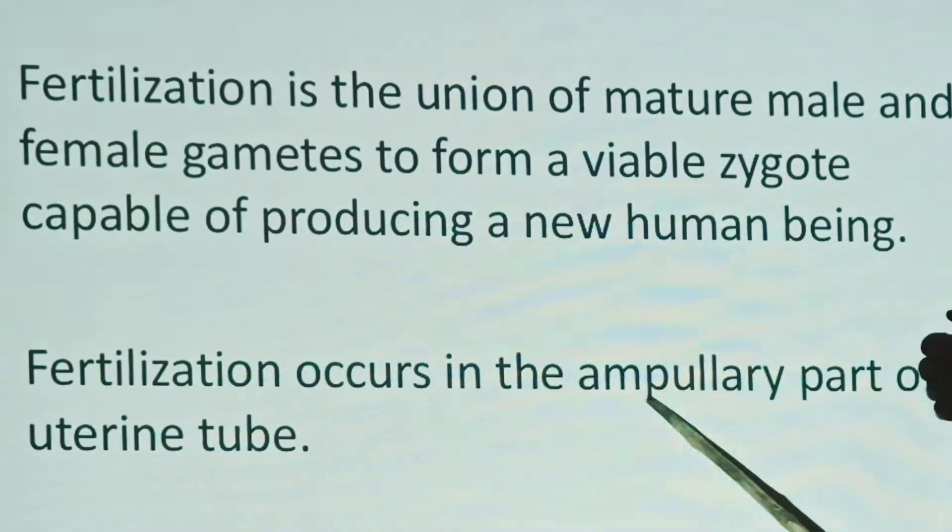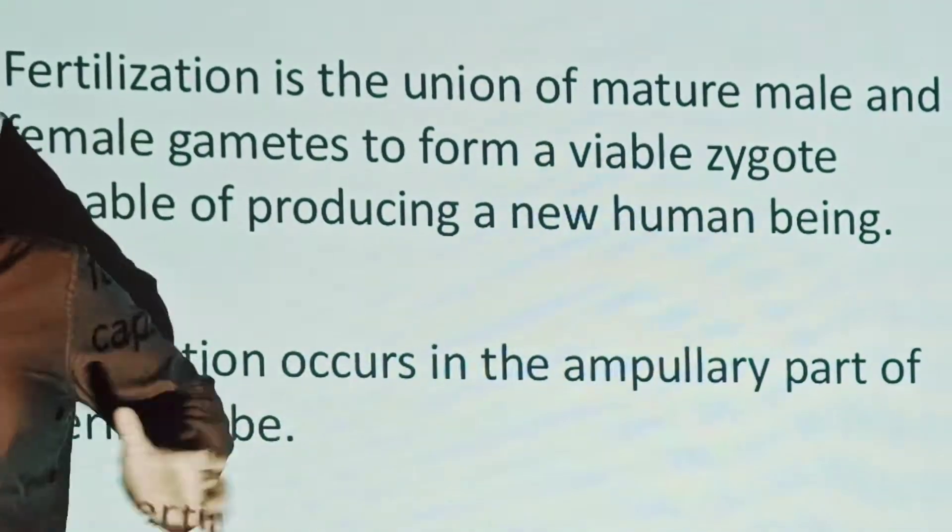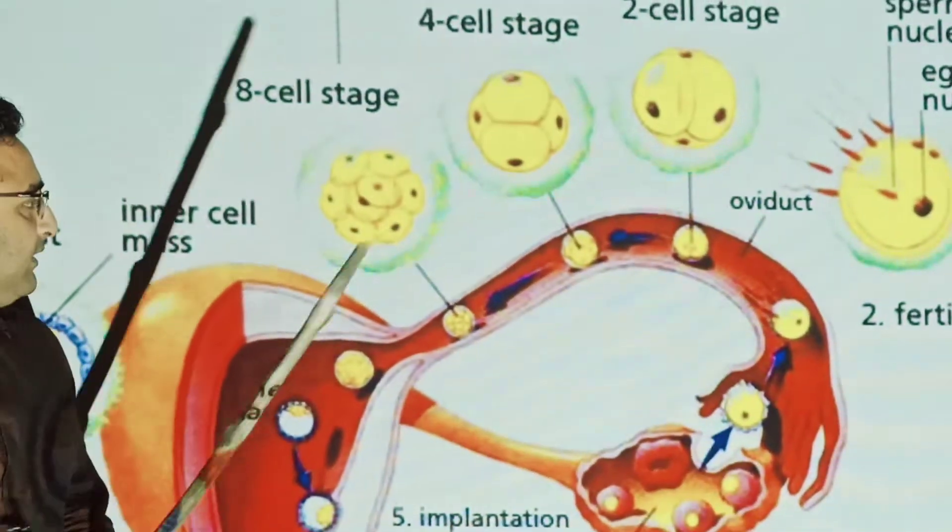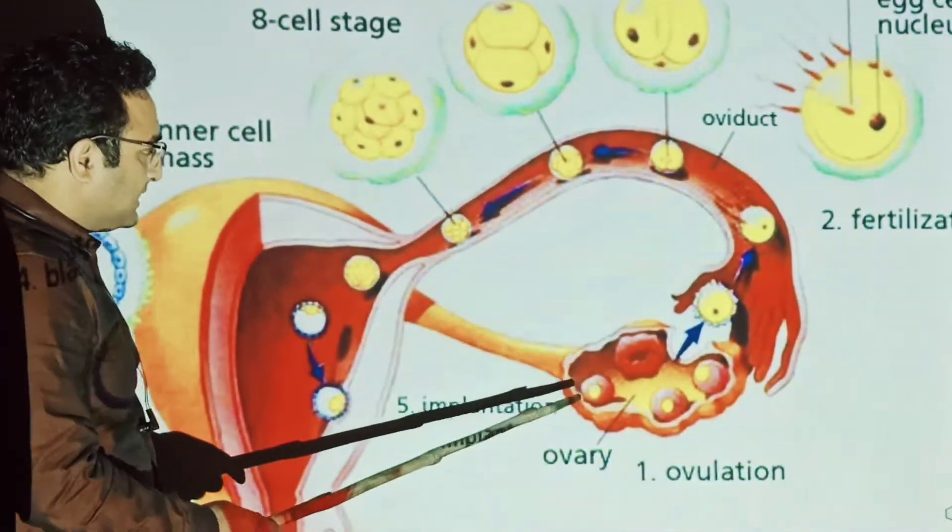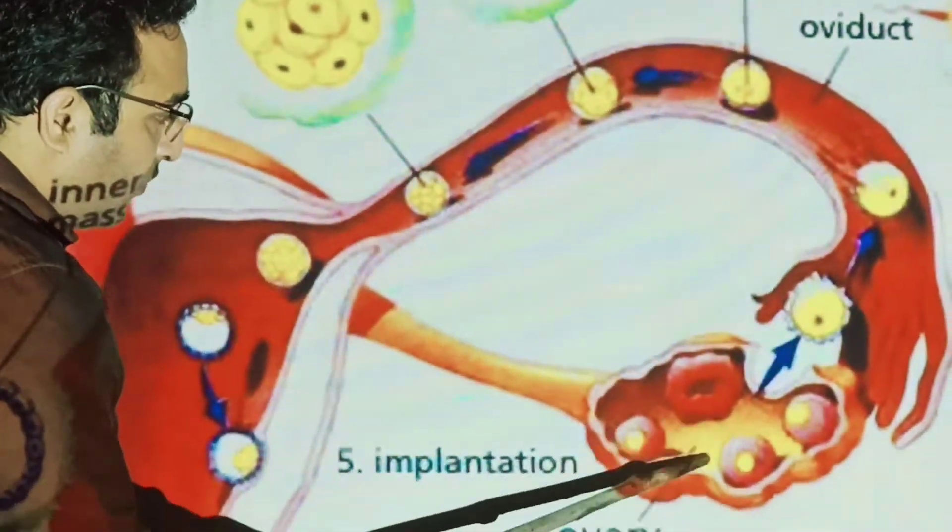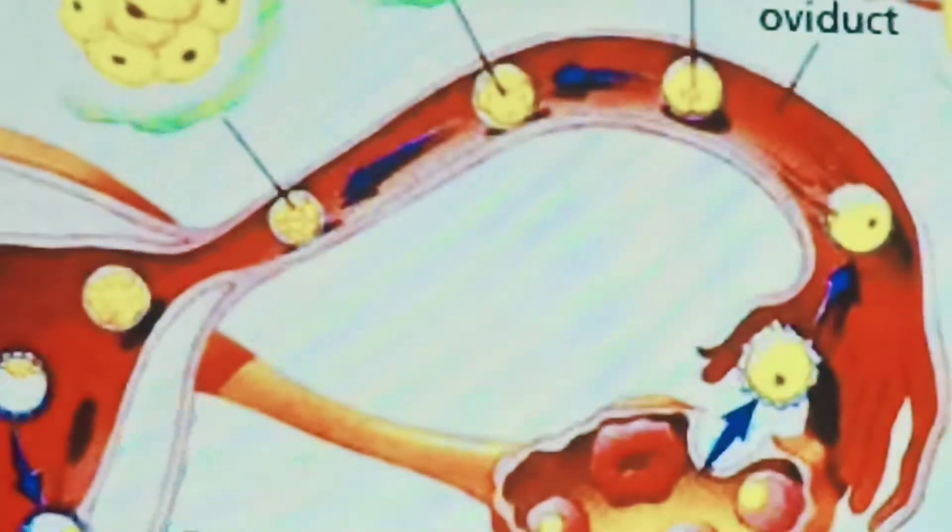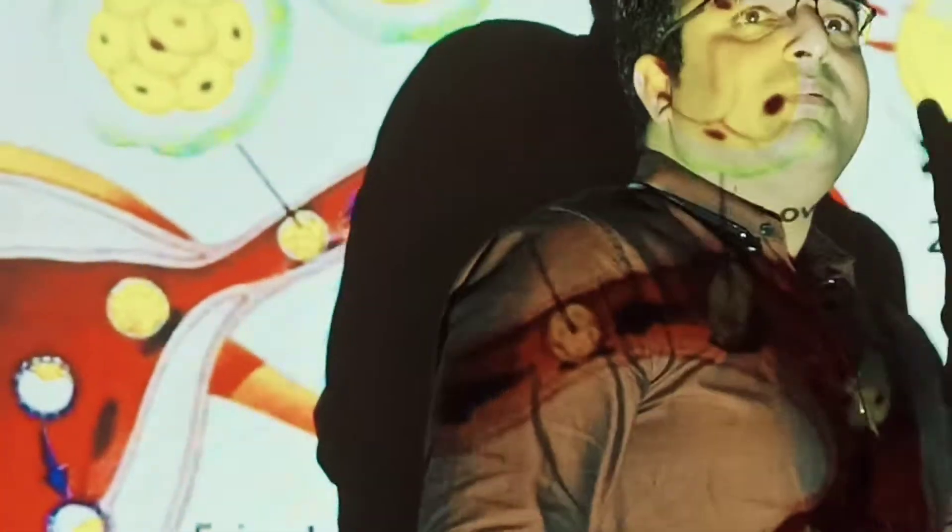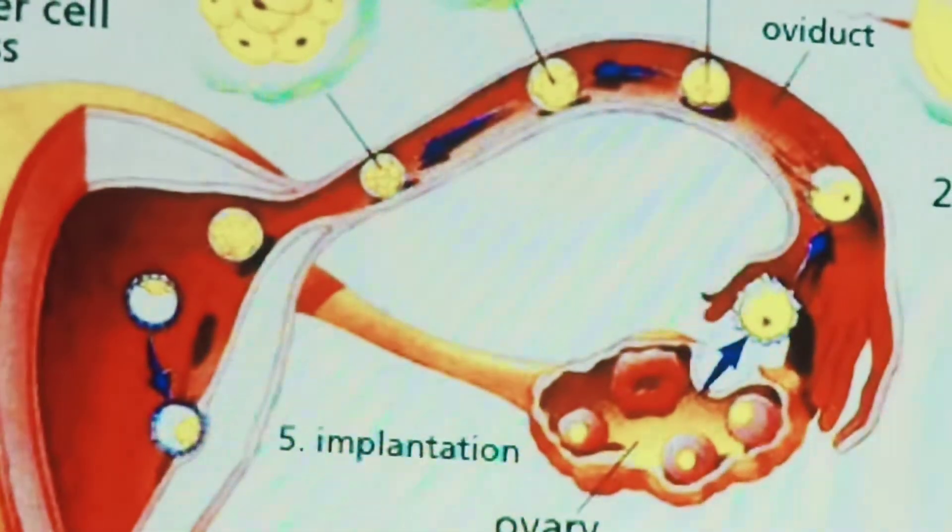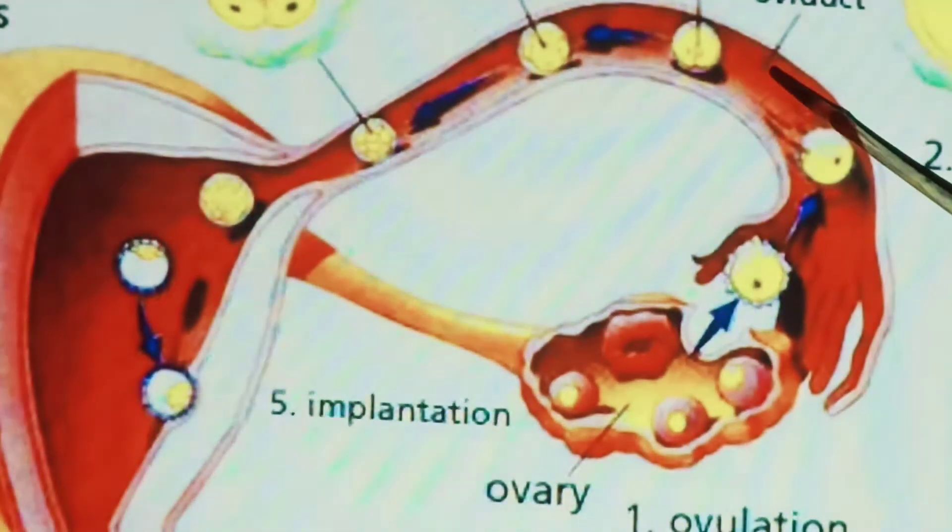So fertilization occurs in the ampulla part of the uterine tube. So this is the uterine tube. What is ovary? Basically ovulation. Secondary oocyte is released into the uterine tube. Now basically what happens here? The sperm comes here.